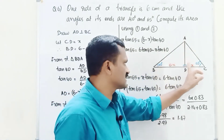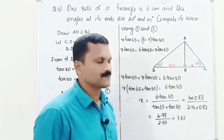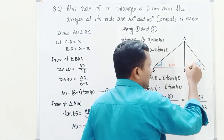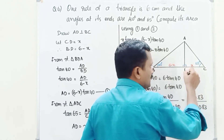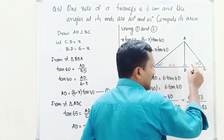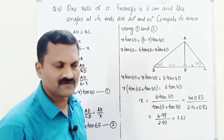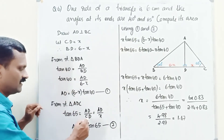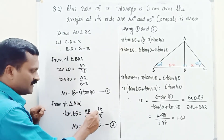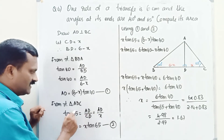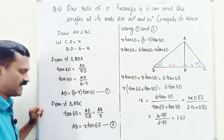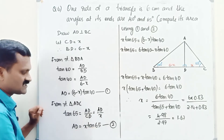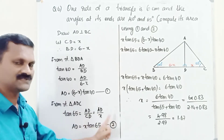Take the next right triangle ADC. In this triangle, the angle is 65 degrees, AD is the opposite side of 65 degrees, and x is the adjacent side of 65 degrees. So tan 65 equals AD by CD. CD is x, so tan 65 equals AD by x. Taking cross multiplication, AD equals x·tan 65. Take this as equation number 2.